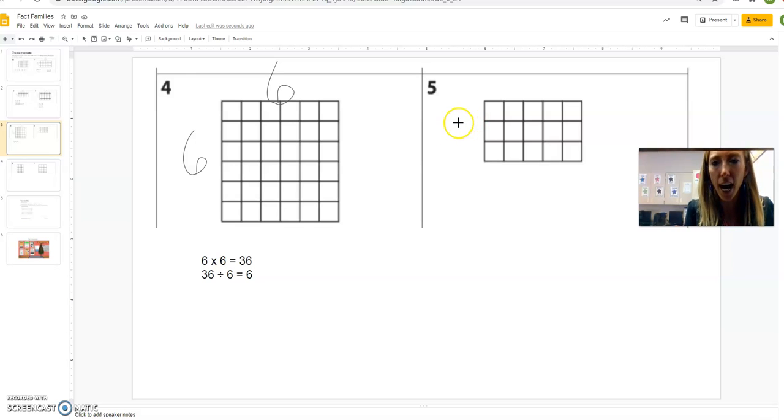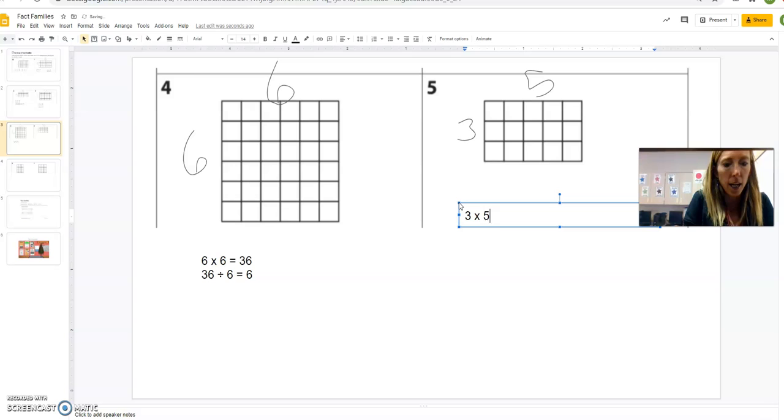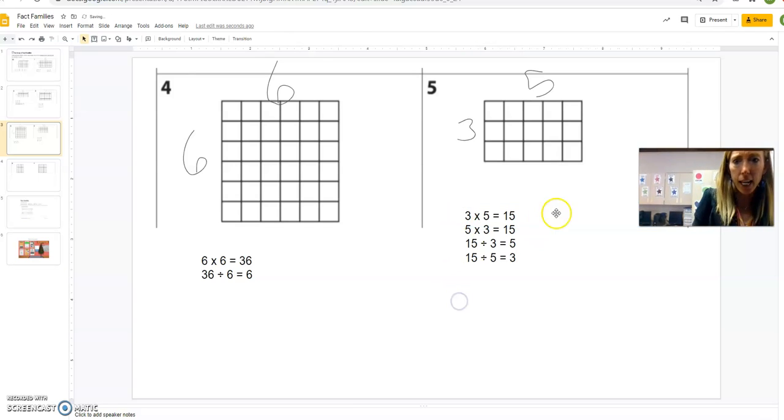Okay, let's go number 5. The numbers dimensions are 3 by 5. And now, my family is going to be 3 times 5 equals what? 15. Oh, yeah. And then 5 times 3 equals what? 15. And now, let's start at 15 and let's divide by 3. Well, I know that's going to be 5 because 5 times 3 is 15. And now, 15 divided by 5 equals, well, 3. Because 3 times 5 is 15. They're a family.